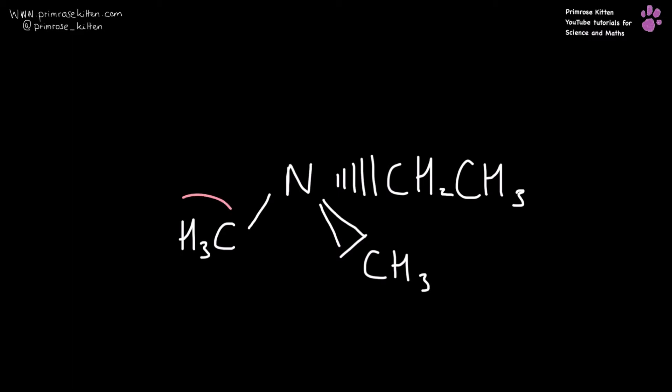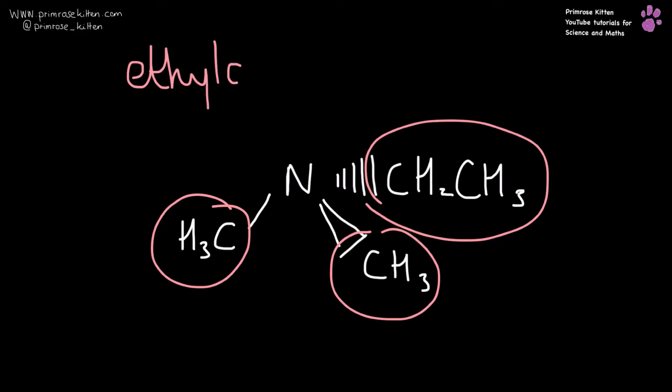If we are getting a bit more complicated with a methyl and methyl and an ethyl group, we need to again, as we do everything, start with alphabetical order. So it's ethyl, di because we have two of them, dimethylamine.